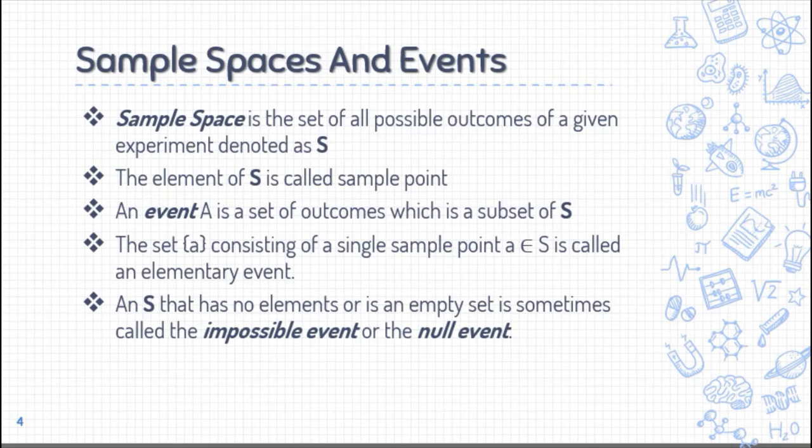So, let's start with sample spaces and event. Sample space is a set of all possible outcomes of a given experiment, denoted as the set S. So sample space contains all the possible outcomes in that set. The element of S is called the sample point.